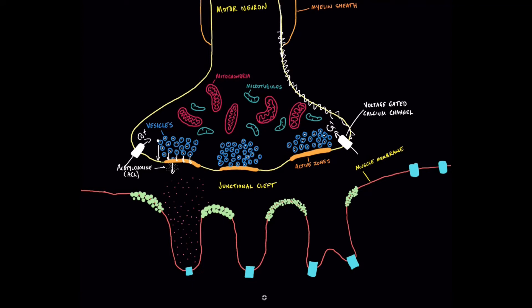Let's look at the other side of the neuromuscular junction and some of the structures there. You can see the muscle membrane we talked about earlier, with these big deep folds — invaginations in the membrane called clefts. There are two types: primary clefts are the initial big folds, and secondary clefts are folds within the primary clefts. At the bottom of these secondary clefts, there are voltage-gated sodium channels, which are important in propagating depolarization of the muscle membrane.